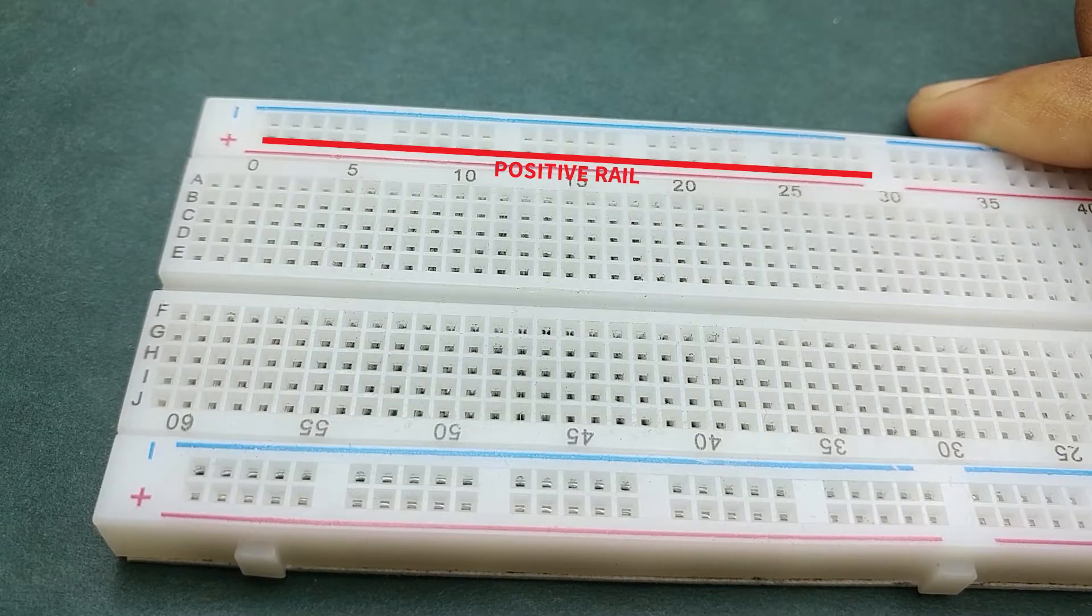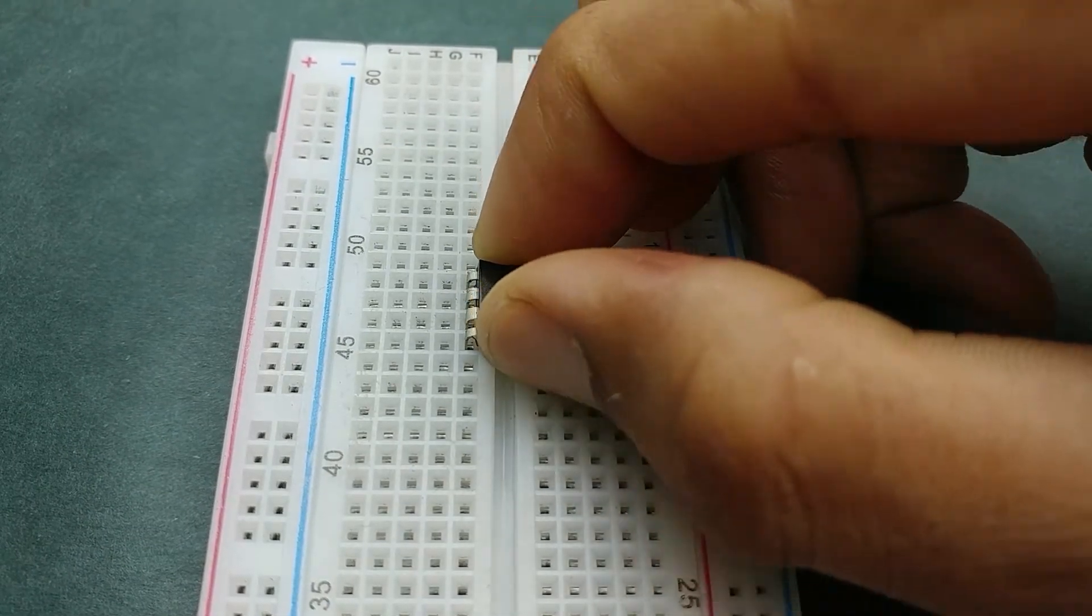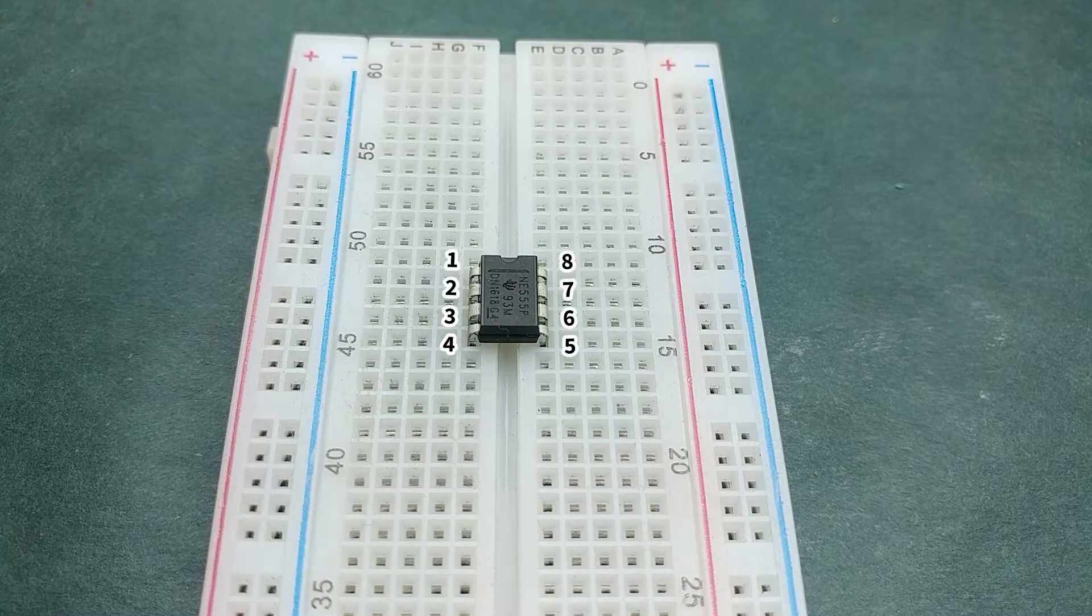I'll be using this row as positive rail and this as negative rail. Place 555 timer IC on the breadboard with its notch facing up and the pinouts are as shown.